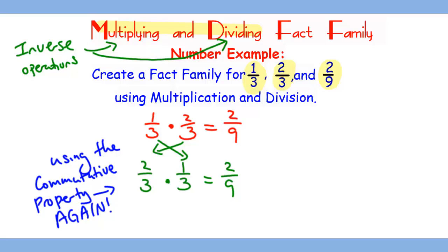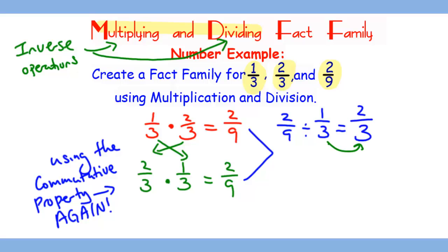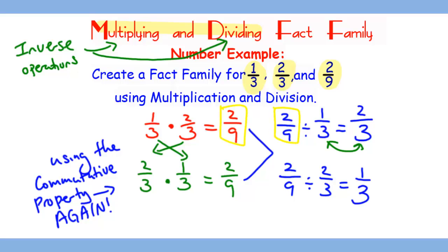We can also apply the inverse operation by taking the product and putting it in the front and dividing by one of the factors, such as 2/9 divided by 1/3 equals 2/3. We can also switch the two factors' positions and rewrite this as 2/9 divided by 2/3 equals 1/3. So in this example, we switch the number and put it in the front, and we switch multiplication to division.